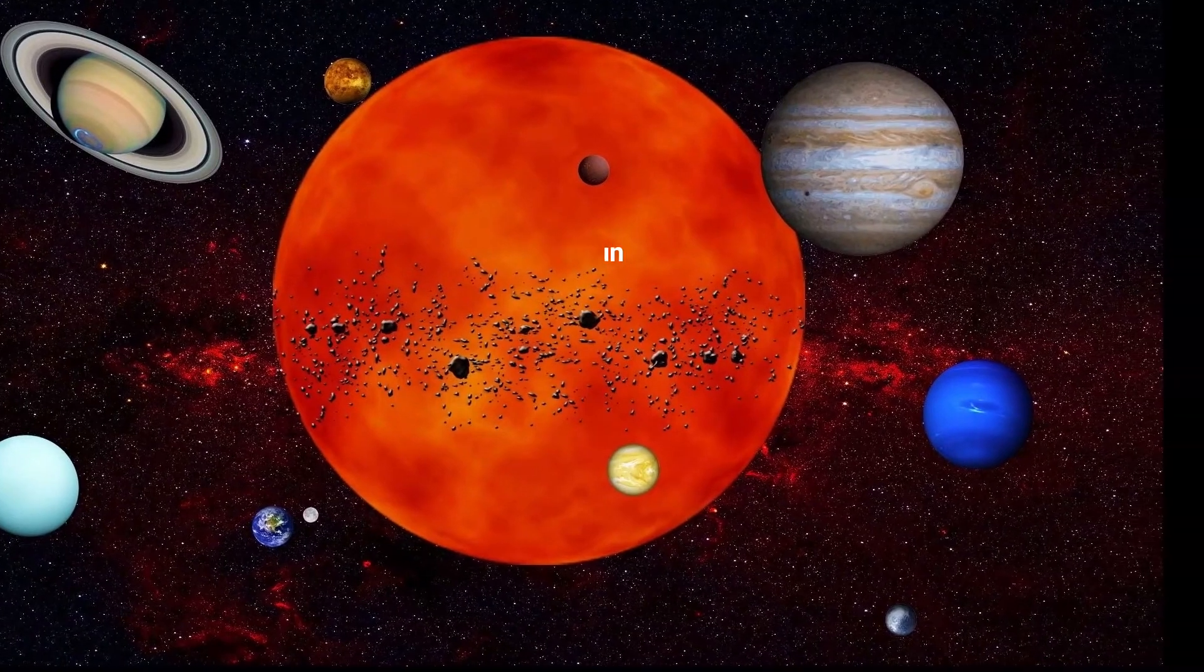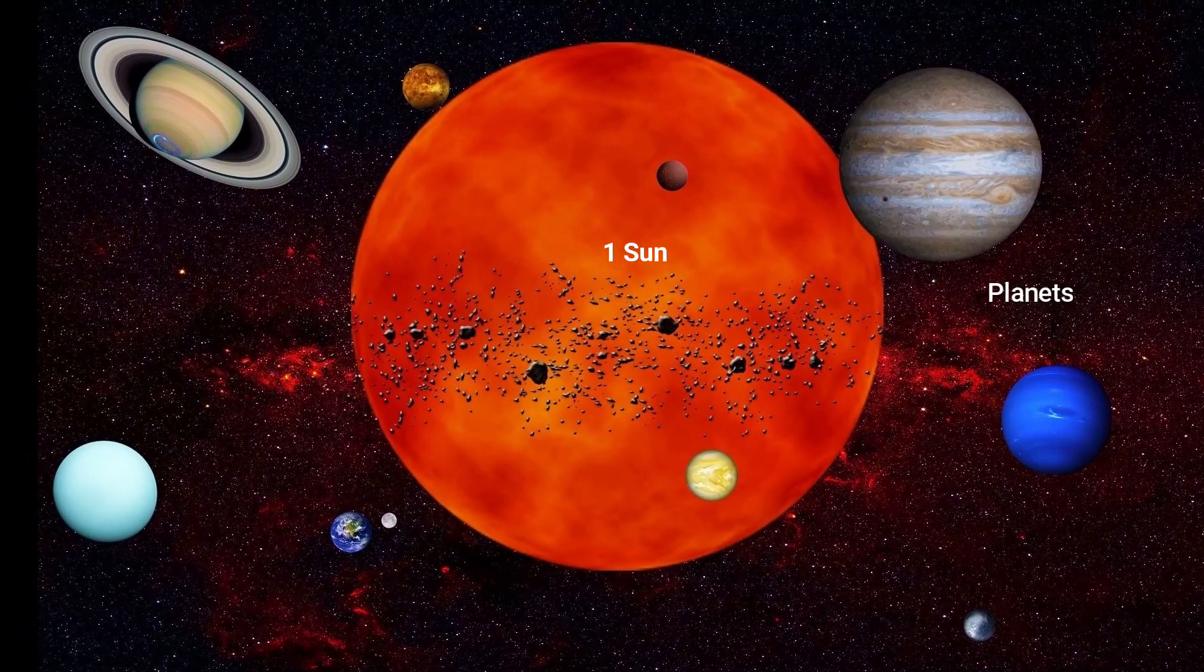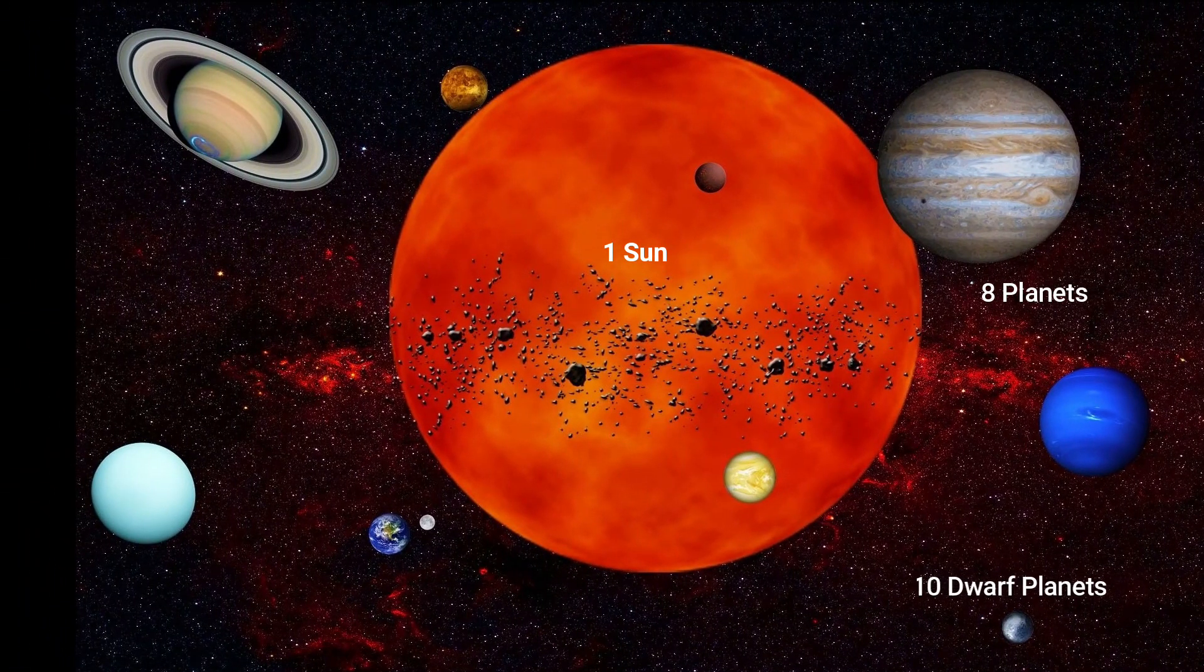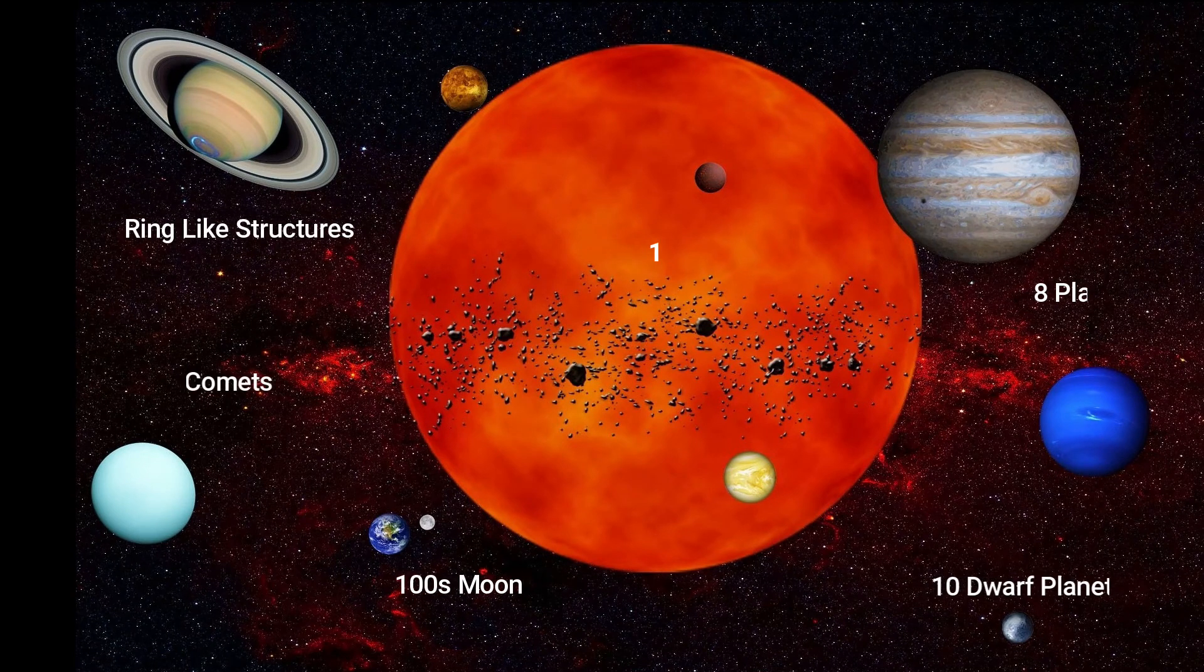So the solar system has one Sun, eight planets, more than 10 dwarf planets, hundreds of moons, four ring-like structures, several comets, and countless asteroids.